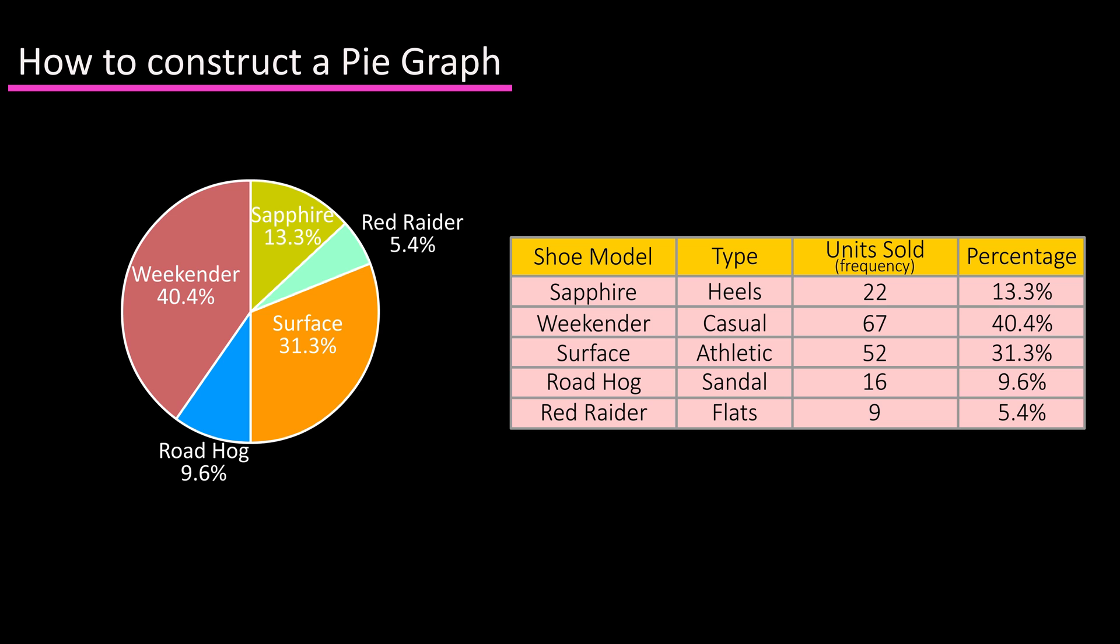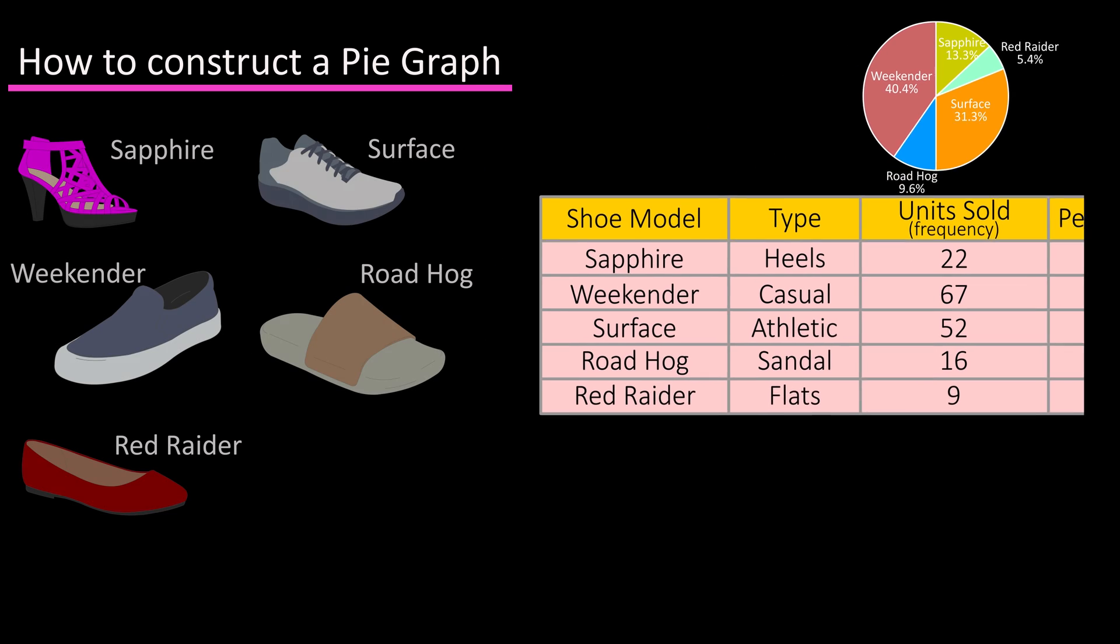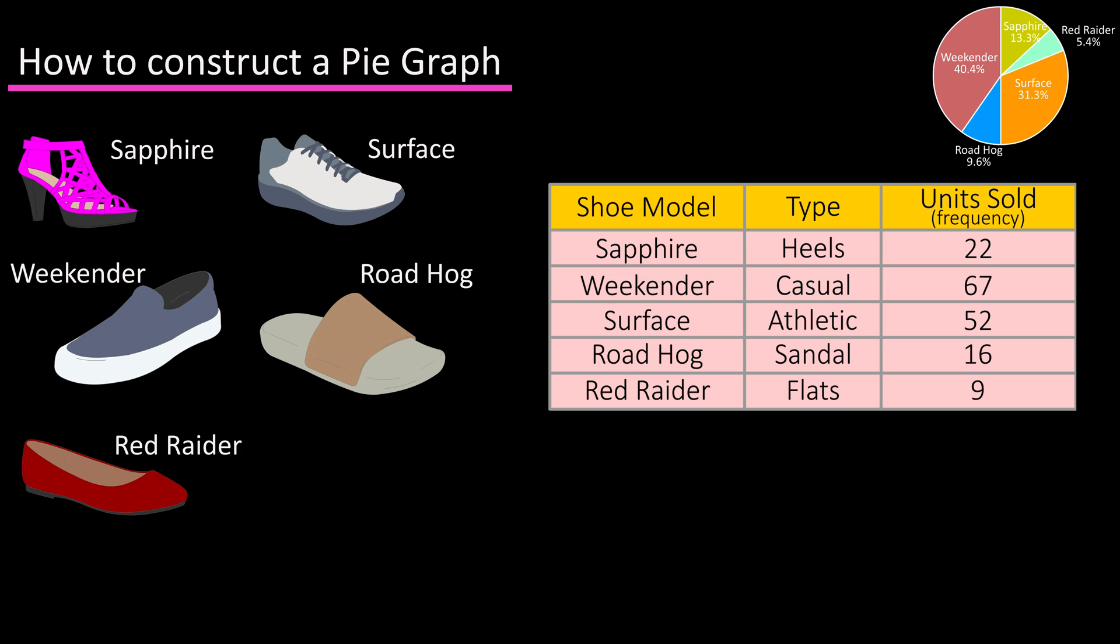It uses slices of a pie to represent this. For instance, let's say you had a shoe company that produced the five shoes shown on the screen. Here's a table listing the number of sales or frequencies of each of those shoes for a given month.